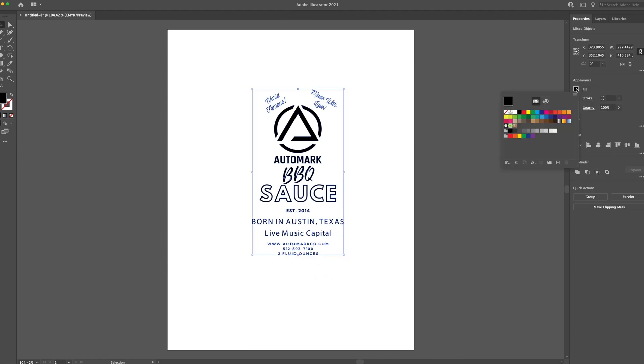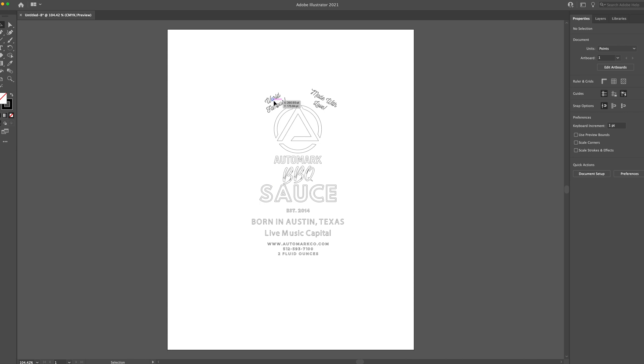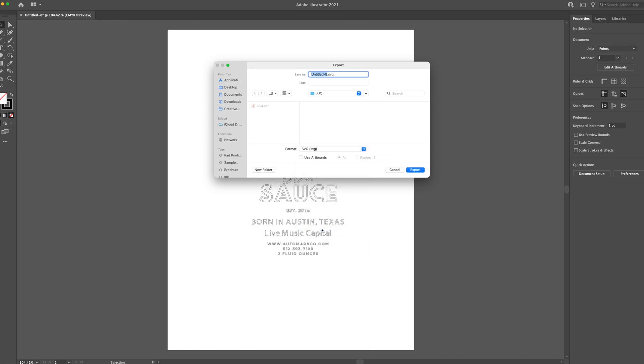Then we simply remove the fill of the entire items and now we create the stroke line at 0.25 points to make sure it is able to be filled in from the laser system. Now let's export that as an SVG file.